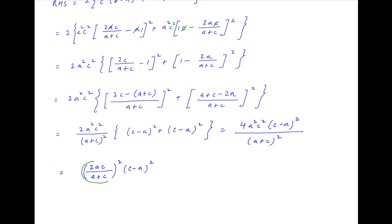Note that 2ac/(a+c) is equal to b as determined earlier. Therefore the value of this expression is equal to b² × (c − a)², which is equal to the left hand side in the problem statement. This completes the proof.